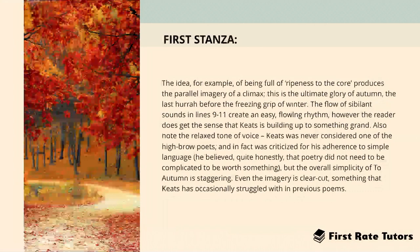The flow of sibilant sounds in lines 9 to 11 of this first stanza creates an easy flowing rhythm, though the reader also gets the sense that Keats is building up something really grand. Keats was never considered one of the highbrow poets — in fact he was criticized for his adherence to simple language. He believed more than anything in poetry's simplicity, and this is reflected in 'To Autumn,' where even the imagery is clear-cut.